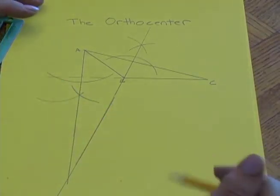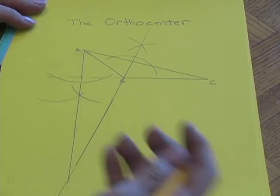Now that I have two perpendicular bisectors, I can see where the orthocenter should be.